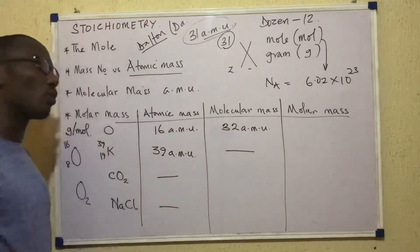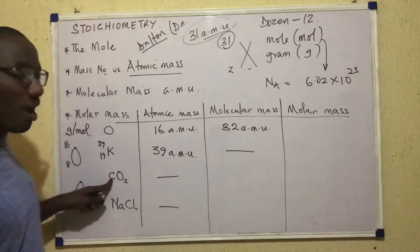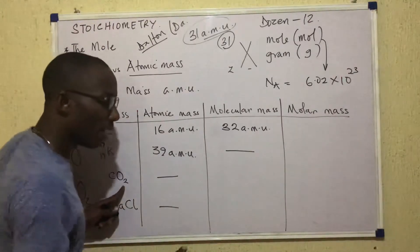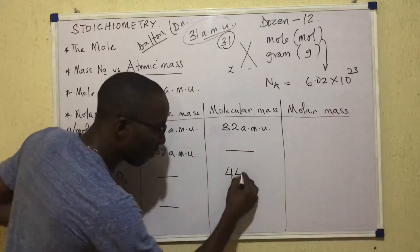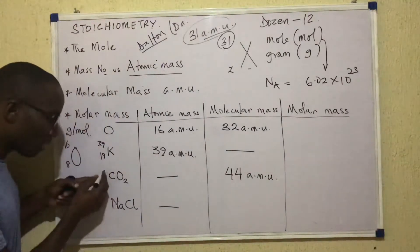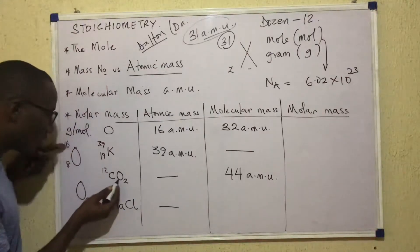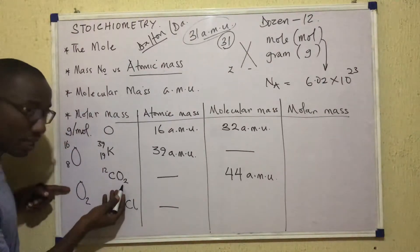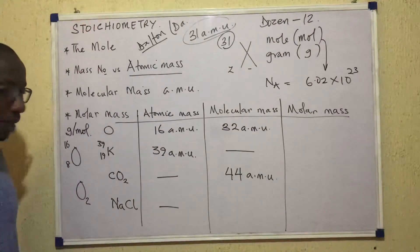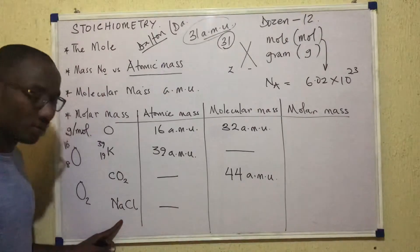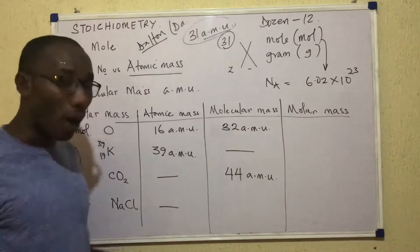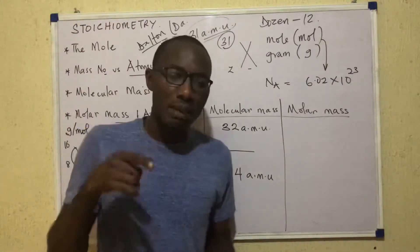What would be the molecular mass of CO₂? It would be 44 AMU. How? Carbon is 12, oxygen is 16, O₂ is 32, so 12 plus 32 gives 44. Now for NaCl — sodium chloride — can I give it a molecular mass? No, because it is not a molecule.